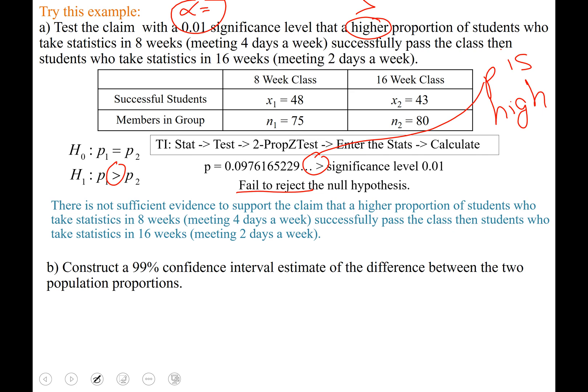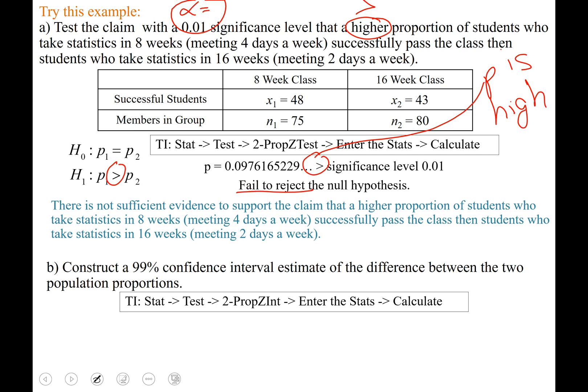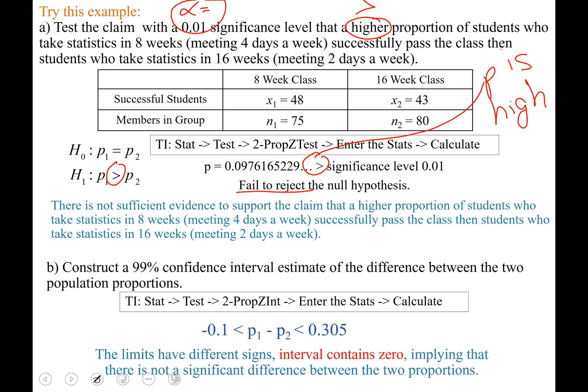Part B asked us to construct a 99% confidence interval. Run 2 Prop Z Interval. The lower limit is negative 0.1 and the upper limit is 0.305. Those are opposite signs, so zero would be included. The limits have different signs, meaning the interval contains zero, implying that there is not a significant difference between the two population proportions.